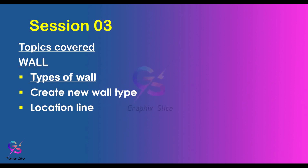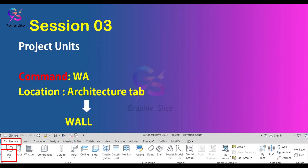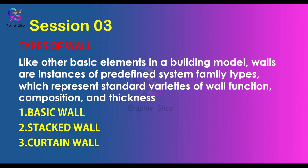Before we start, what do you mean by wall? It's a basic element. Where is it available? It's available with the command 'wa', or you can go to the ribbon Architecture tab, Wall panel, and select the wall tool.